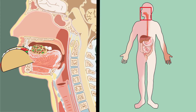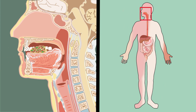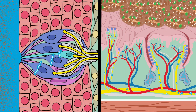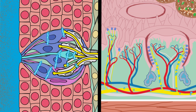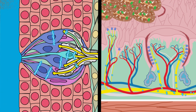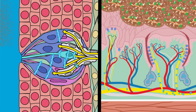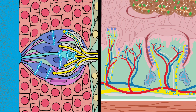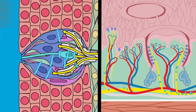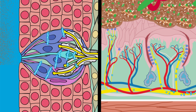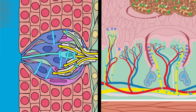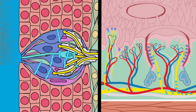Saliva also solubilizes dry foods so that they can be tasted by the tongue, which contains the major taste buds in the oral cavity. These cells detect molecules from the food and form clusters of 50 to 100 columnar cells resembling a garlic bulb, serving as checkpoints for quality control, distinguishing between pleasant and unpleasant tastes. Most poisons, for example, taste bitter, while energy-rich foods taste sweet or umami.